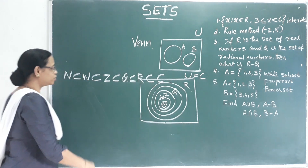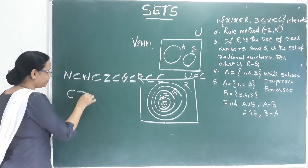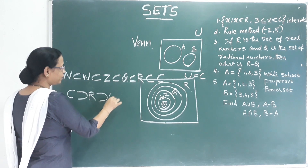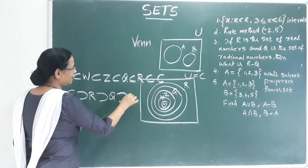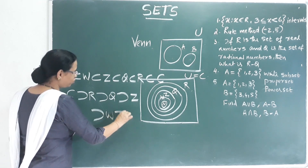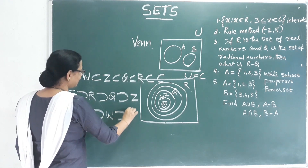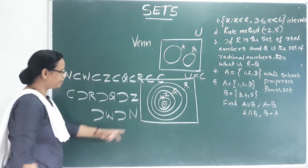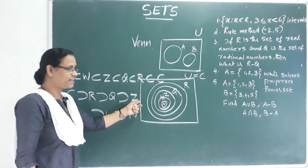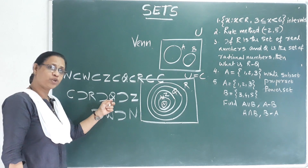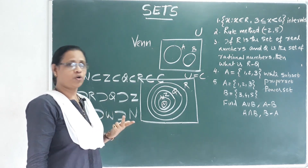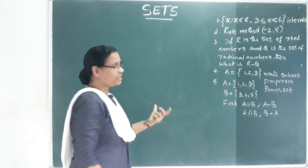The natural number is a subset of whole numbers. The whole number is a subset of Z. Z is a subset of rational numbers. Rational numbers are a subset of real numbers. Real numbers are a subset of complex numbers. So: Natural (N) ⊂ Whole (W) ⊂ Integer (Z) ⊂ Rational (Q) ⊂ Real (R) ⊂ Complex (C). That's the representation.